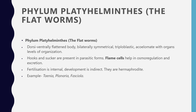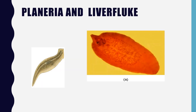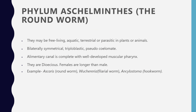Parasitic forms of Platyhelminthes have hooks and suckers to draw nutrition from the host body. They have flame cells which help in osmoregulation and excretion. Examples include Taenia solium, Planaria, and Fasciola — you can see the liver fluke and Planaria here. These belong to phylum Platyhelminthes.